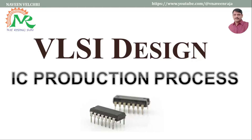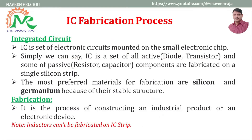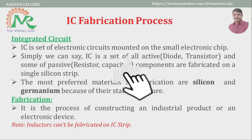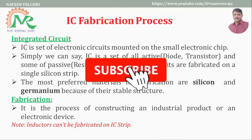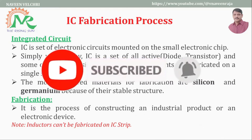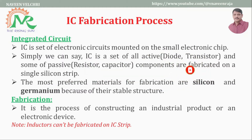In today's video I am going to explain about the IC production process. Before going to the fabrication process, we have to know what is an integrated circuit. The name itself gives the information: it is the integrating of different components that are interconnected, forming a circuit. An integrated circuit is a set of all active and some passive components that are fabricated on a single silicon strip.